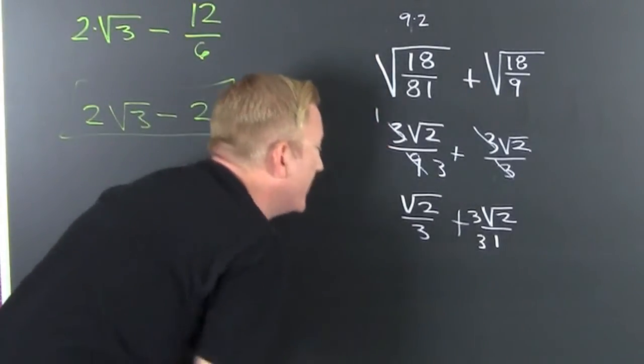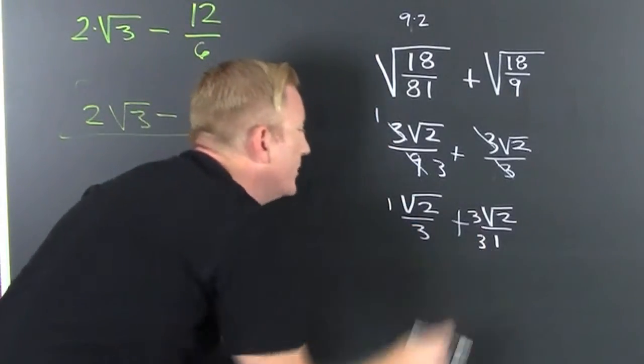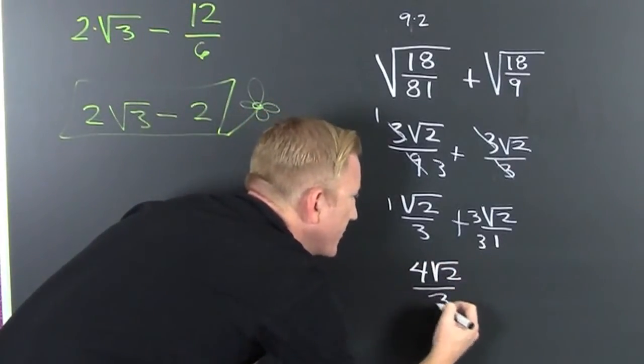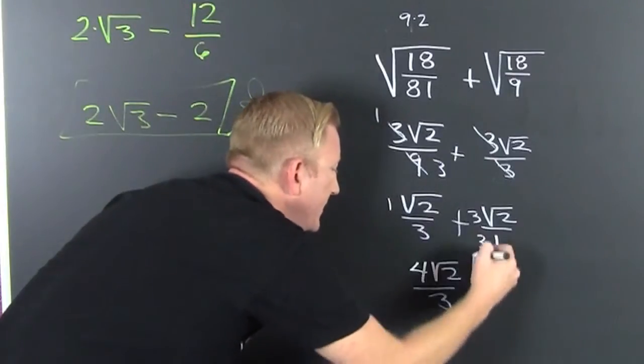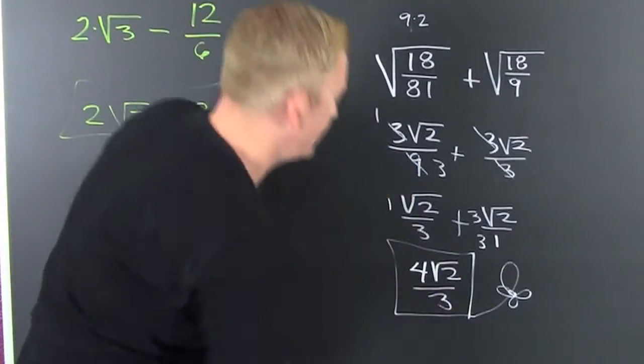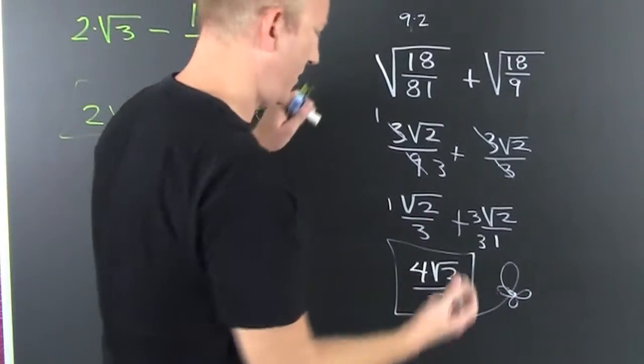So 1√2 plus 3√2 is 4√2 over 3. It could be prettier. I just messed it up.